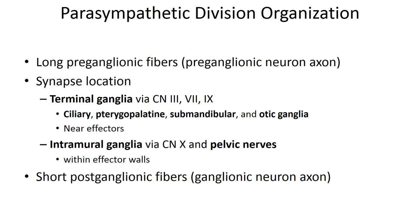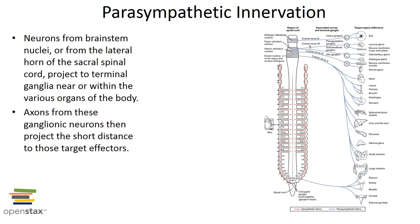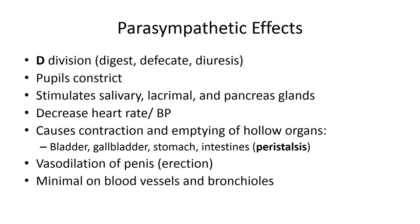Here are some of the parasympathetic divisions discussed previously — remember it's the craniosacral division. This shows the innervation of the parasympathetic system, again demonstrating the difference in preganglionic and postganglionic fibers. Some effects can be seen with the parasympathetic nervous system. The parasympathetic nervous system will have a one-at-a-time effect; you won't see a mass response in the body.